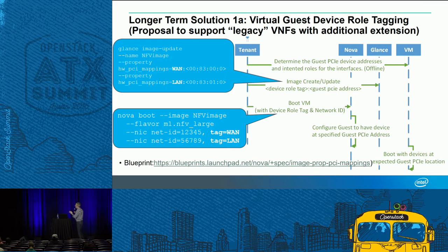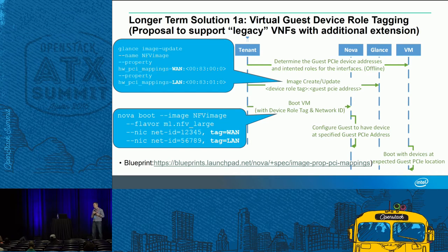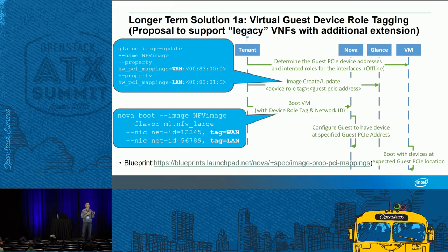For the case where a VNF can't look at config drive info and has a very static view of how it wants devices allocated, we need to look at the PCIe address they really want the LAN or WAN to show up on. The proposal is to make an extension in Glance around image metadata — to tag the particular device capability like WAN or LAN with the known PCIe address in the guest that the VM really wants to boot with. Then we leverage the Nova boot process to create the mapping ensuring the correct PCIe address is used, so when the guest completes the boot process, the LAN, WAN, or management interface shows up in the right location predictably.